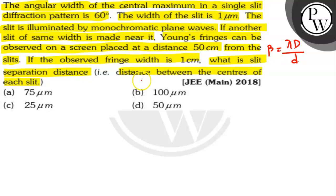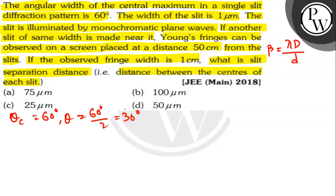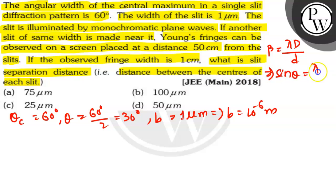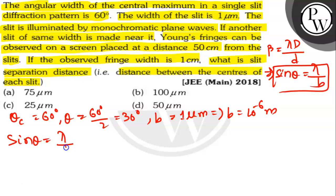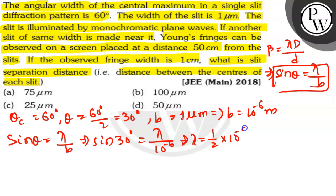The angular width of the central maxima θ_c is 60 degrees, so the half angle θ is 60/2 = 30 degrees. The width of the slit B is 1 micrometer, which is 10 to the power minus 6 meters. Using the relation sin θ = lambda by B, we substitute sin 30° = lambda / (10⁻⁶). Since sin 30° = 1/2, lambda equals 0.5 × 10⁻⁶ meters.